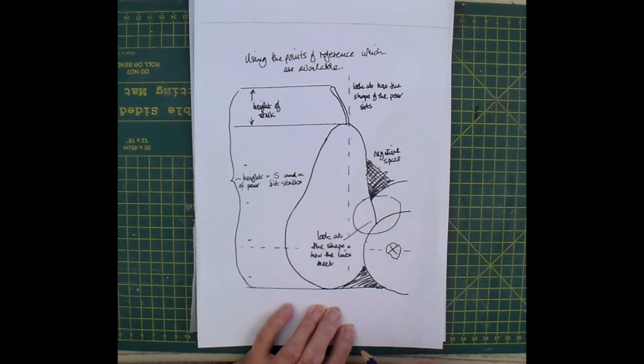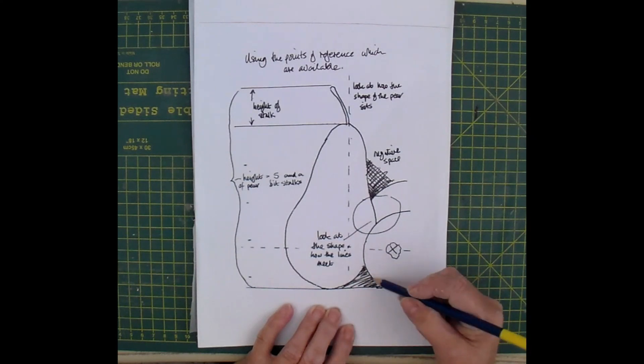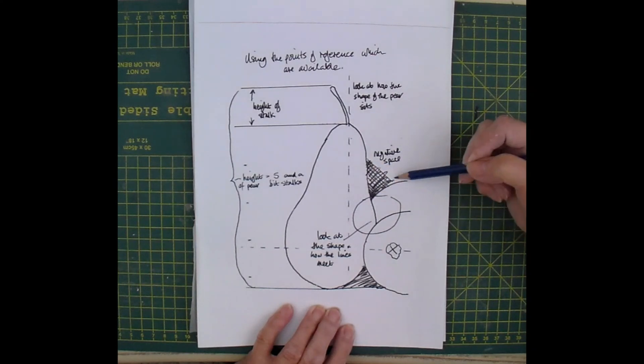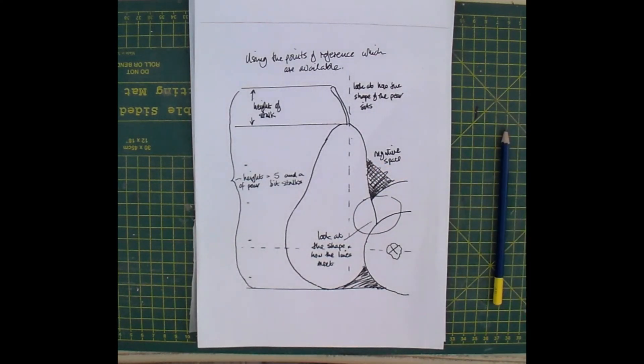You also have to help you the negative space. So look at that shape that you are left with and look at that shape that you are left with.